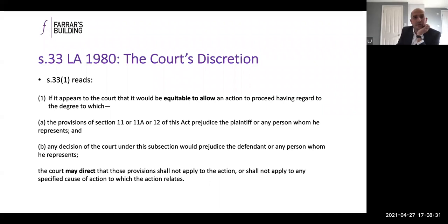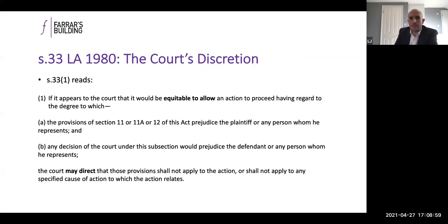That leads nicely to considerations of section 33. What happens if the claimant is outside the primary limitation period? The wording of section 33 couldn't be broader: the question is whether it appears to the court that it would be equitable to allow the action to proceed, balancing prejudice to the claimant against any prejudice the defendant would suffer. The court may direct that the primary limitation period won't apply, and in truth if a court determines it's equitable to disapply the primary limitation period, it will always so direct.